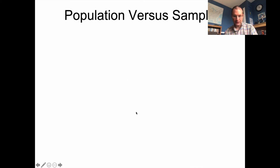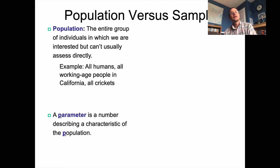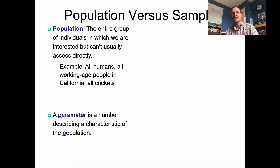I want to start out with this basic distinction, which I believe we've talked about before, but it's worth talking about again. It's the distinction between a population and a sample. A population means the entire group of individuals in which we are interested, but usually can't access directly.